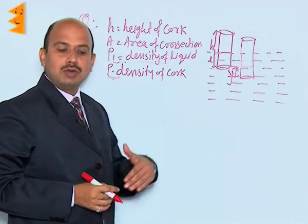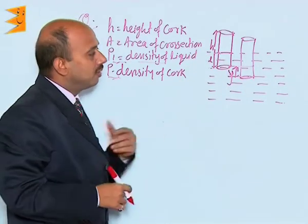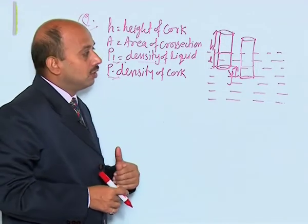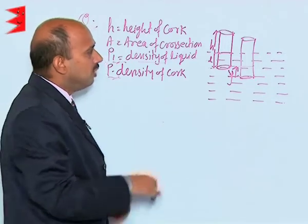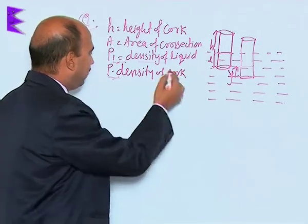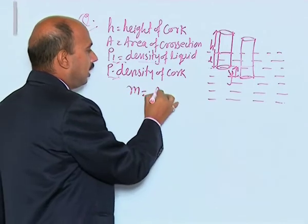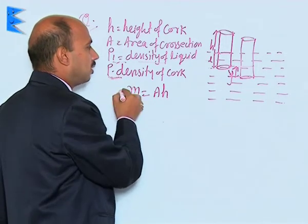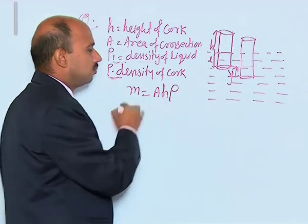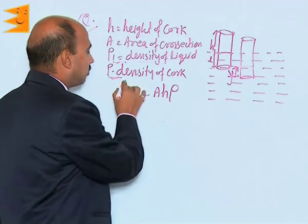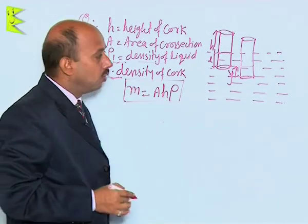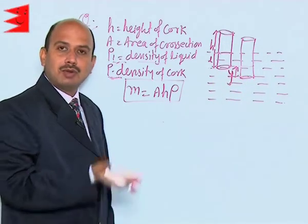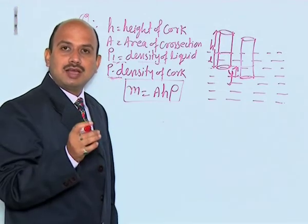when this cylinder is pushed downward by the small distance y, it will start oscillating in the liquid. You have to find its time period. The mass of the cylinder can be written as m = Ahρ, that is the volume of the cylinder multiplied by the density of the cork rho. This is the mass of the cylinder. When it is pushed downward by a small displacement y, it experiences an upward thrust acting as a restoring force.